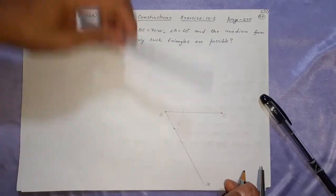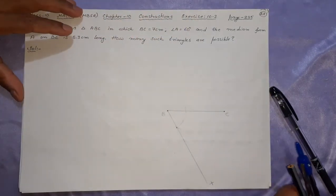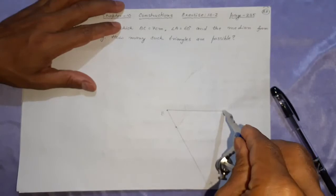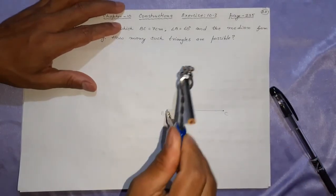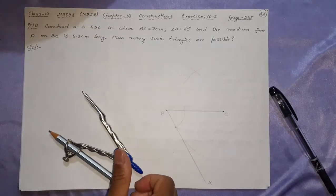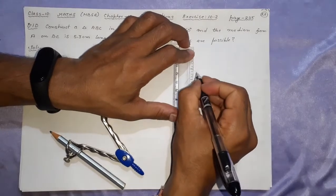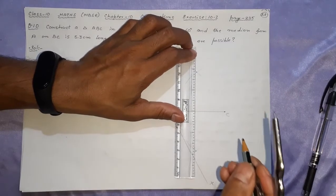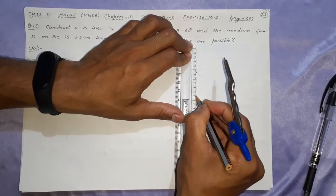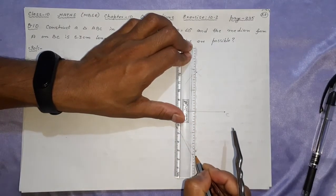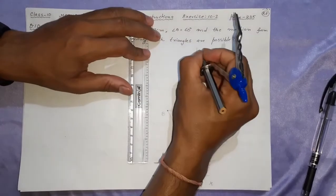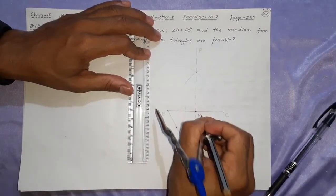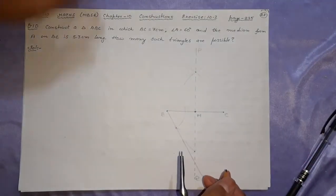After this, draw the perpendicular bisector of BC. Taking here, taking here, taking here, taking here. Now join the two points — here and here. This will be PQ. Here it is M.